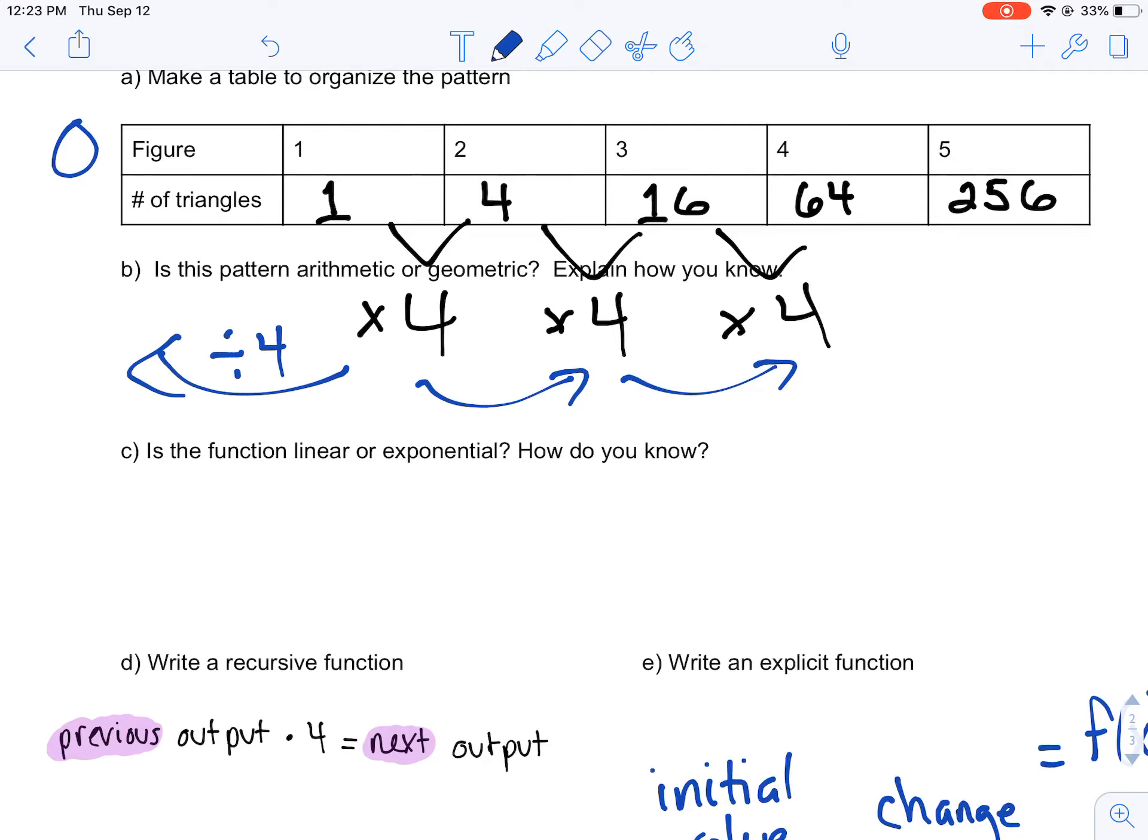So I took 1, I divided it by 4, I just left it as a fraction. Now my change here, each time I'm multiplying by 4. So you notice I'm going to use the dot and not the x. There's a reason for that. Because I'm using x as an input. So my change is times 4.